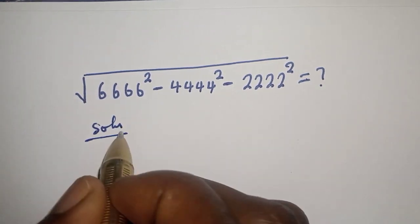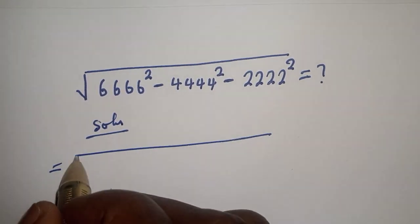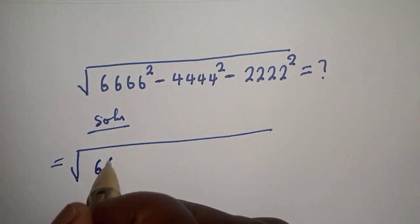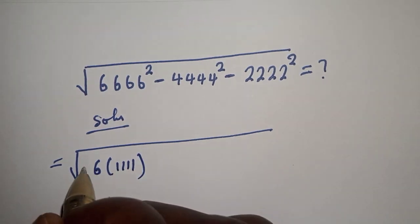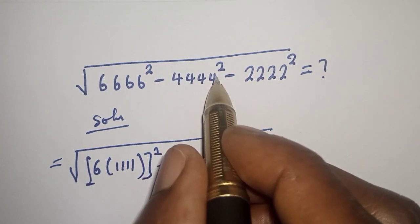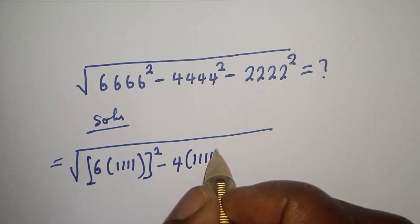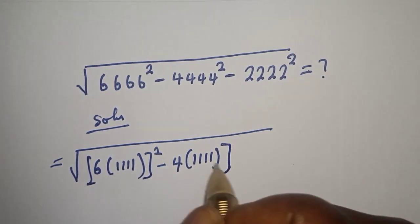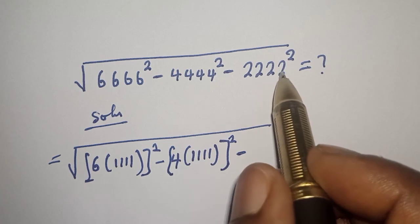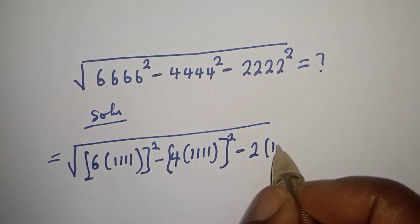This can be written as: square root of 6666 squared, which can be written as 6 times 1111, all squared; minus 4444 squared, which can be written as 4 times 1111, all squared; minus 2222 squared, which can be written as 2 times 1111, all squared.